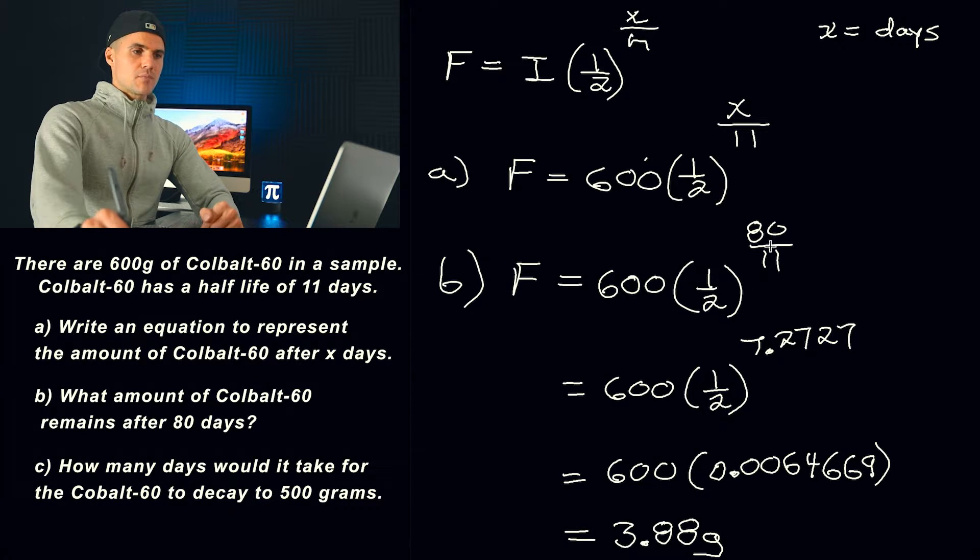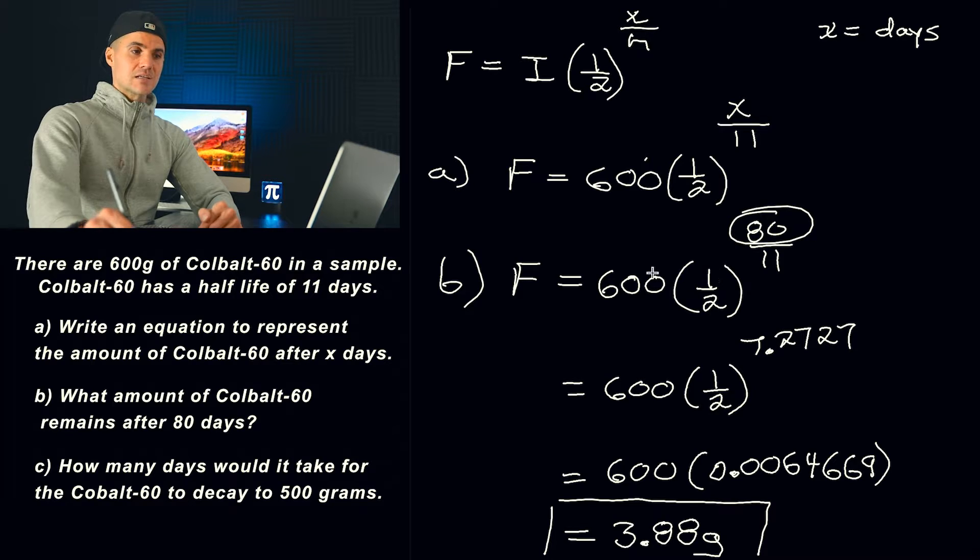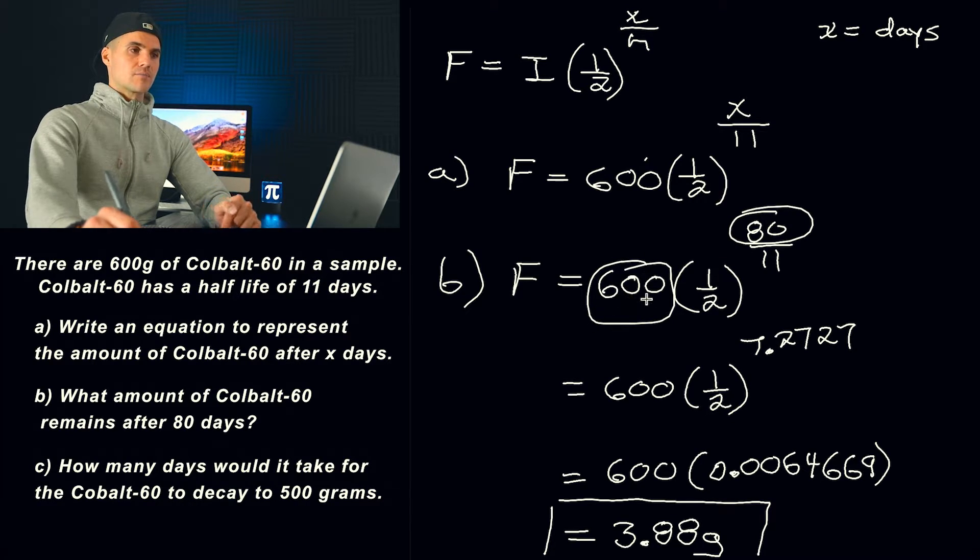From here, you just want to make sure you do your BEDMAS operations. So you would do the 80 divided by 11 first. You get 7.2727. Then you would take one-half, or 0.5, to the power of that. You would get this bracket right here. Try not to round to too many decimal places. Multiply it by 600, and you get 3.88 grams. So that's the amount of cobalt-60 that's going to remain after 80 days if we start with an initial amount of 600 grams. That is the answer for part B.